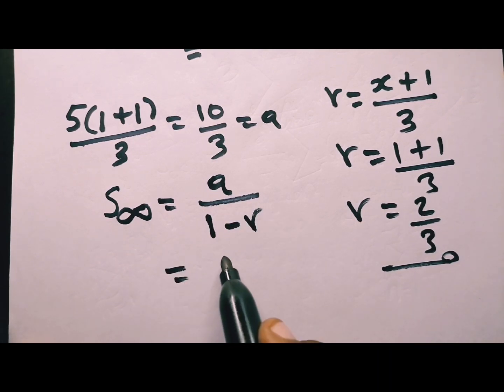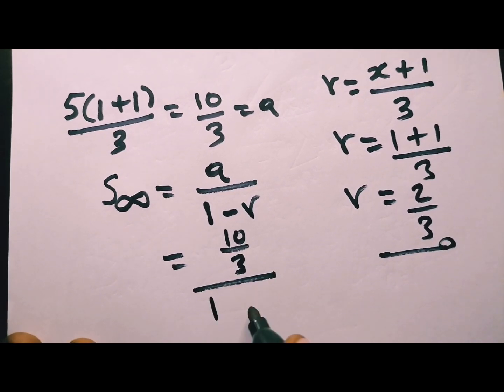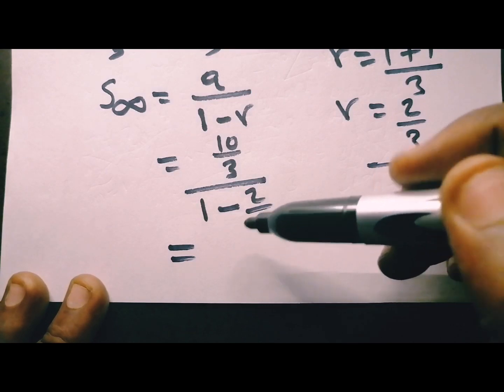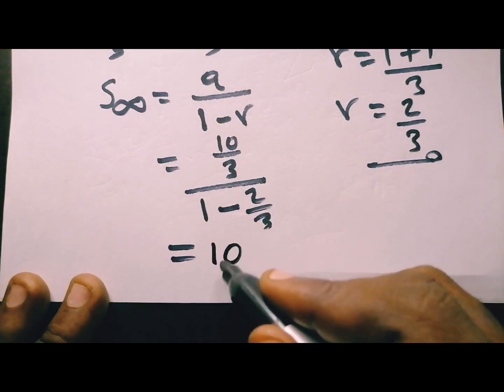So a is 10 over 3 all over 1 minus r. So r is 2 over 3. And when you press all this using your calculator, you will get 10.